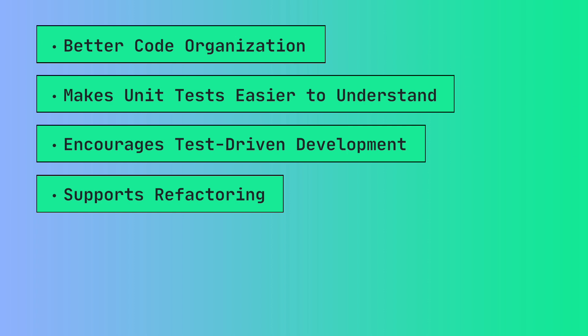Tests are also easier to refactor, and again this comes with the idea of the predictable structure for all tests. You know where you have to go when you need to make a change. For example, if you need to change the way you call a method or the variables you pass during the act phase, you know exactly where in your test to make that change. This reduces the cognitive load required to make small adjustments, which in the long run adds up to a huge benefit.